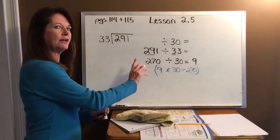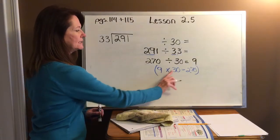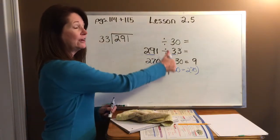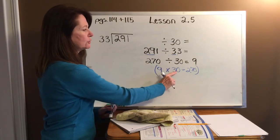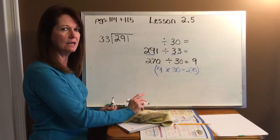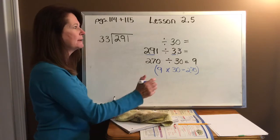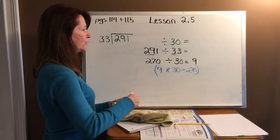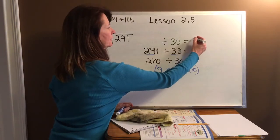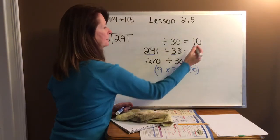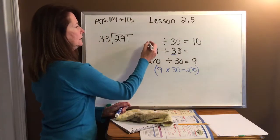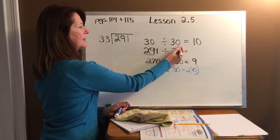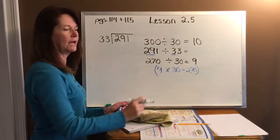If three times nine gave me 27, go to the higher estimate. What's three times 10? Three times 10 would be 30. So I can go ahead and put my 10 over here. Three times 10 is 30. So I'm going to put 30 right here and then tack on that zero.